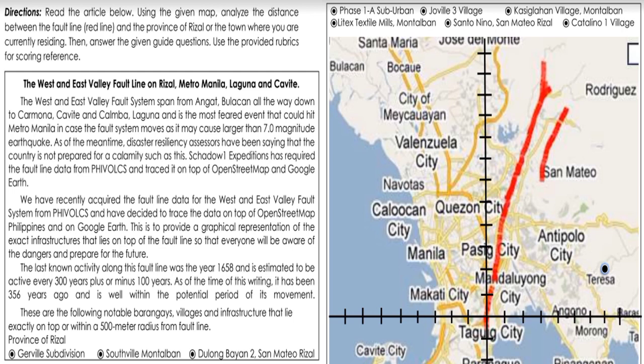The last known activity along this fault line was the year 1658 and is estimated to be active every 300 years, plus or minus 100 years. As of the time of this writing, it has been 356 years ago and is well within the potential period of its movement. The following are notable barangays, villages, and infrastructure that lie exactly on top or within a 500-metre radius from the fault line in the Province of Rizal: Jervali Subdivision, Southville Montalban, Thulong Bayan II San Mateo Rizal, Phase 1A Suburban Jervali III Village, Casiglahan Village Montalban, Lightex Textile Mills Montalban, Santo Nino San Mateo Rizal, and Catalino I Village.